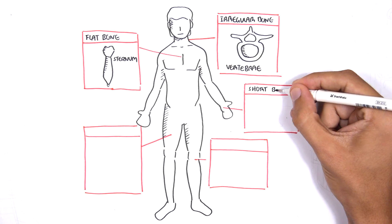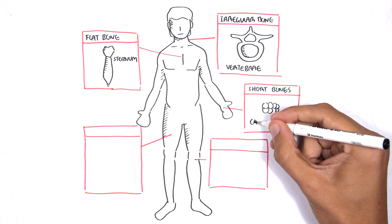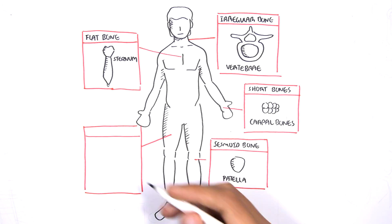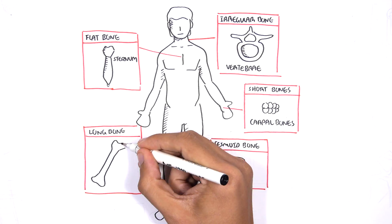We have short bones, which are the carpal bones in the hands. We have sesamoid bones such as our patella or kneecap, and long bones such as the humerus.